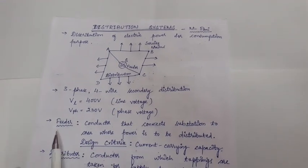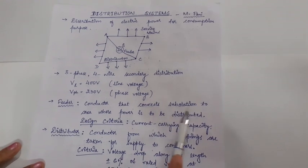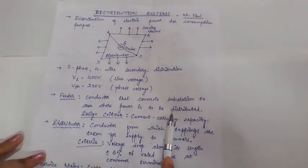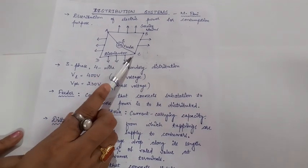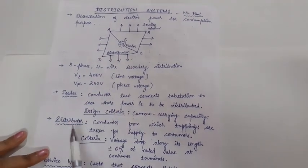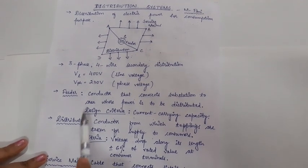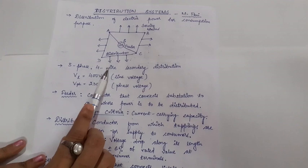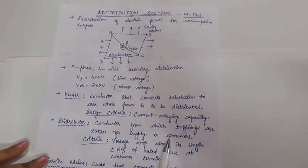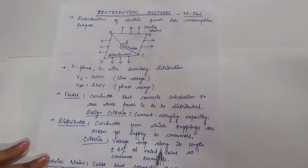The feeder is a conductor that connects the substation to the area where power is to be distributed. The design criteria for a feeder is the current carrying capacity. The distributor is the conductor from which tappings are taken for supply to the consumers. The design criteria considered for a distributor is the voltage drop along its length.